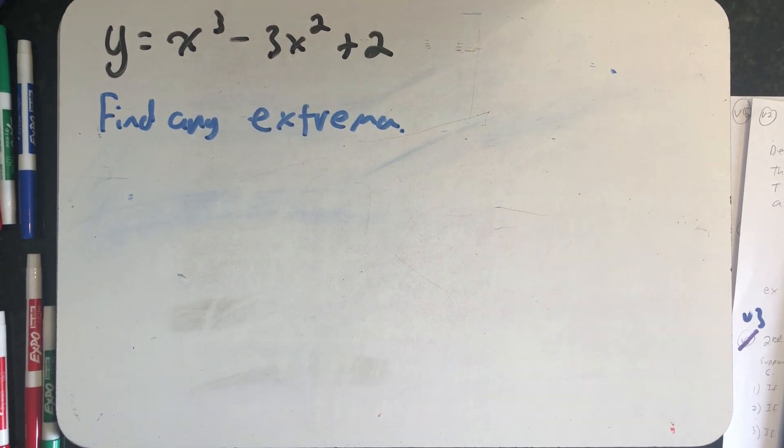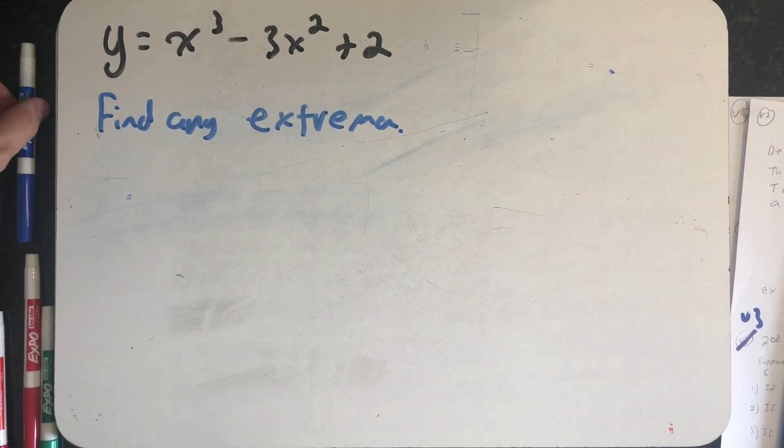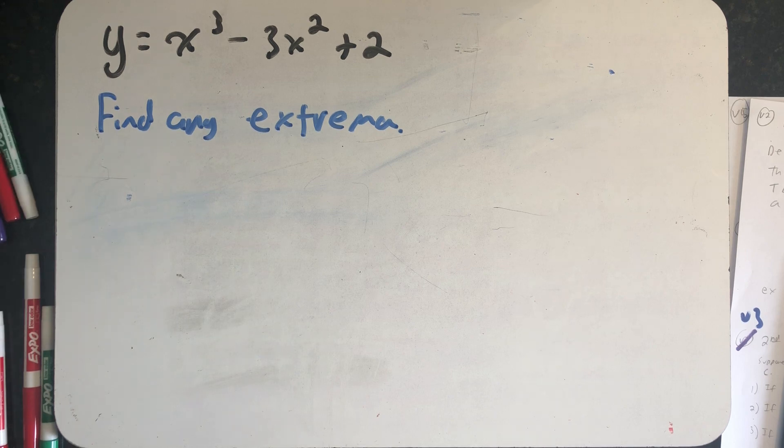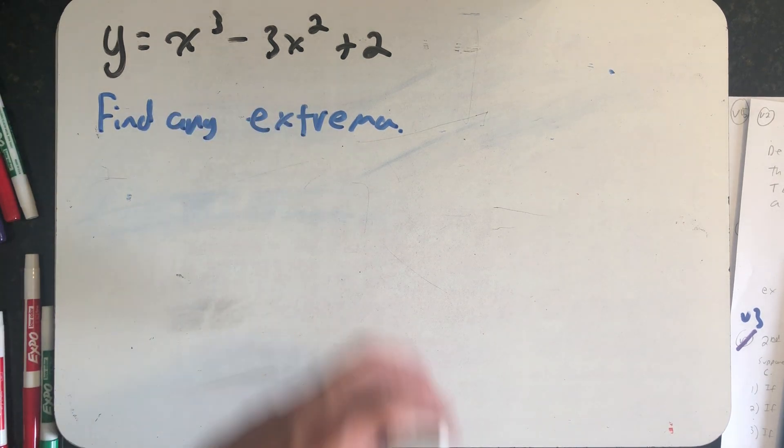In our last video, we saw the second derivative test for local extreme values. I thought we'd use this example where I'm asked to find any extrema for y = x³ - 3x² + 2.